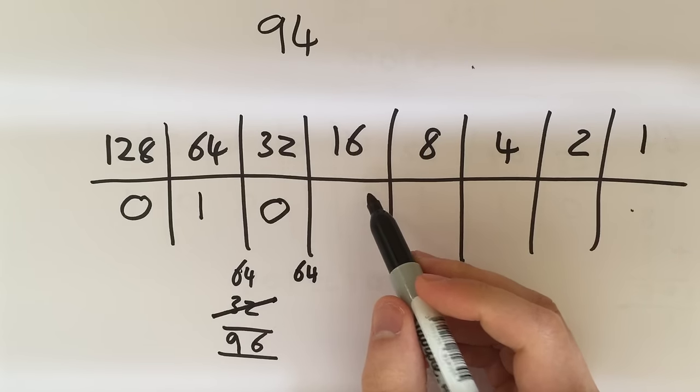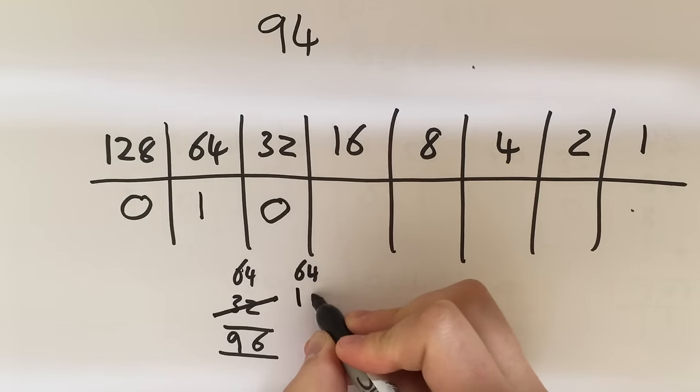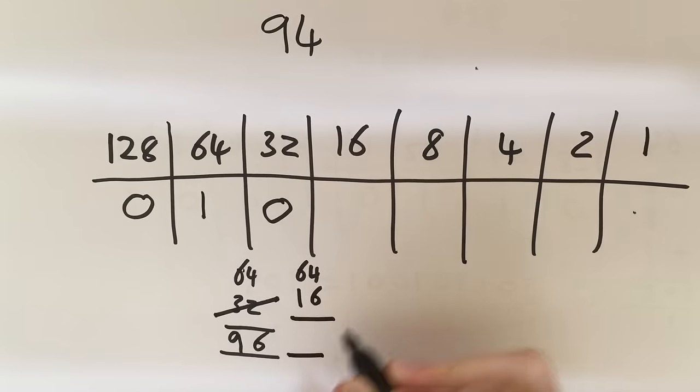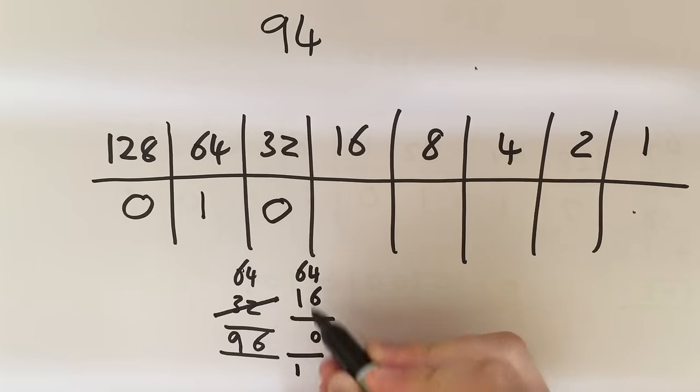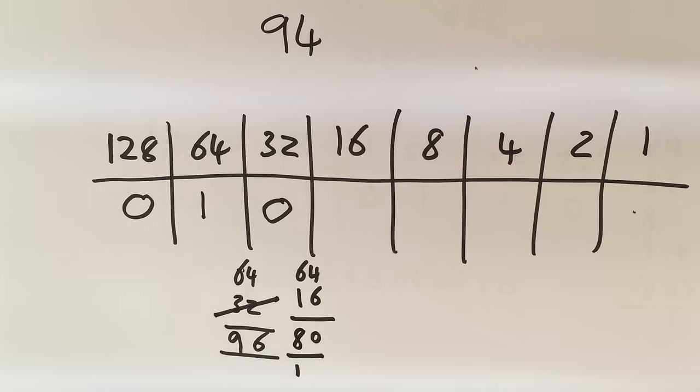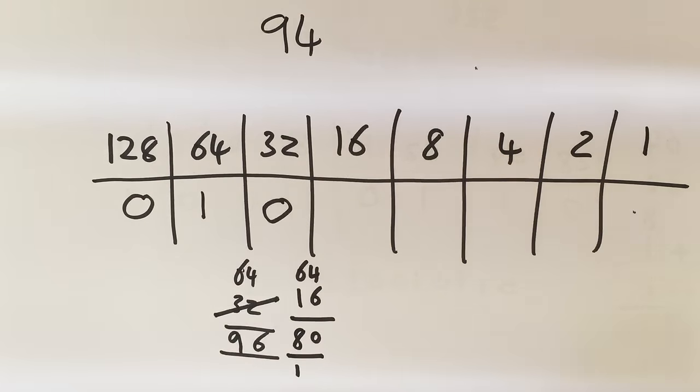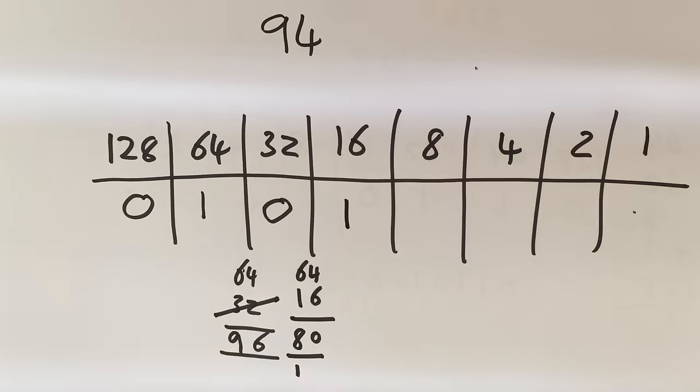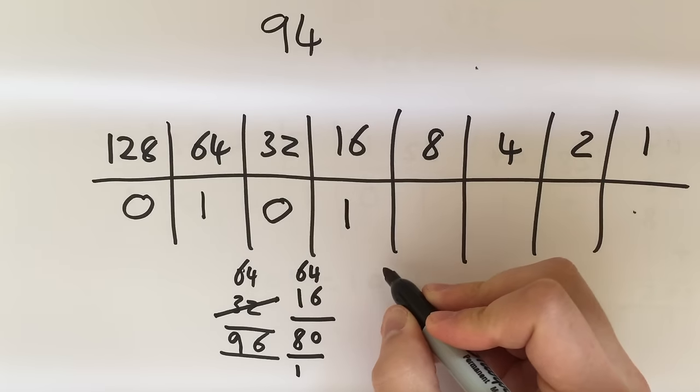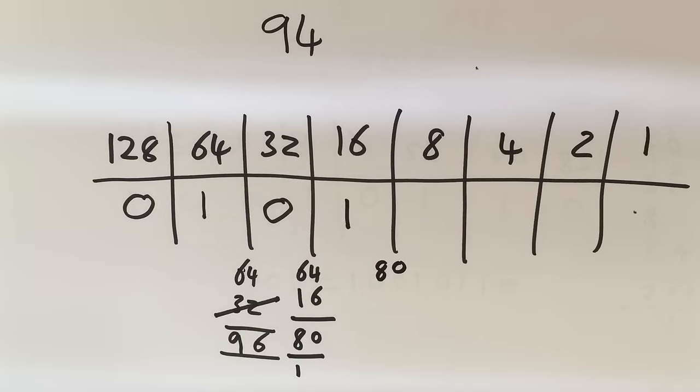So on to the next step, can I add on 16? Well I can write 16 underneath here and see where we get to. 4 add 6 is 10, 6 add 1 is 7, add the 1, 8. That gets me up to 80 and that is under 94 so yes I will have the 16. And that reminds me I'm up to 80 so I can just put 80 underneath that line there.